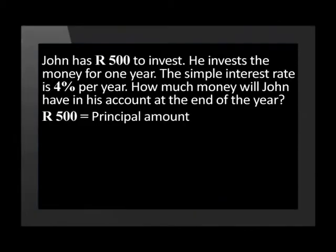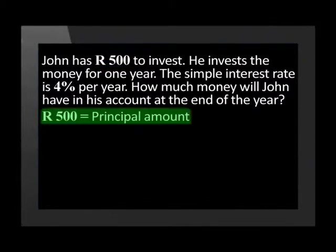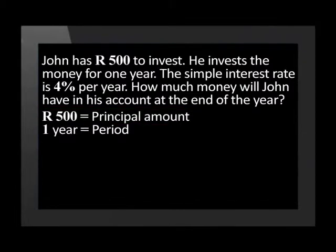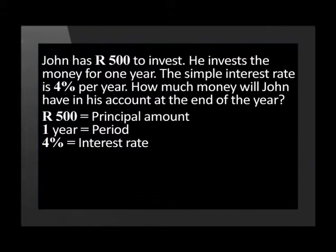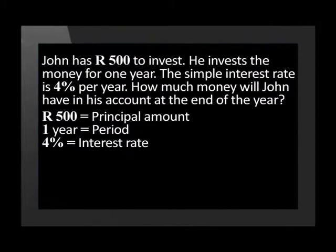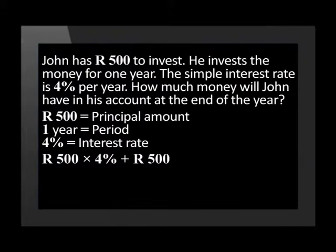Let's do a problem together. John has 500 rand to invest — this is known as the principal or initial amount. He invests the money for one year, which is the investment period or the term of the investment. The simple interest rate is four percent per year — this is the rate at which the interest is going to be calculated. How much money will John have in his account at the end of the year? At the end of the year John will have an extra four percent of 500 rand added to the initial 500 rand. Four percent of 500 rand is 20 rand, so the total John will receive at the end of the year is 520 rand.